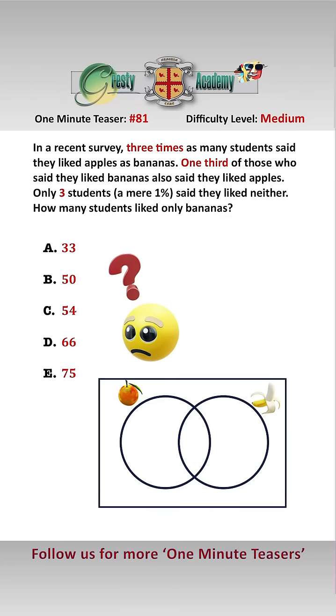Let's turn to our trusty Venn diagram. As only three students, which represents 1%, like neither apples nor bananas, we can put three there.